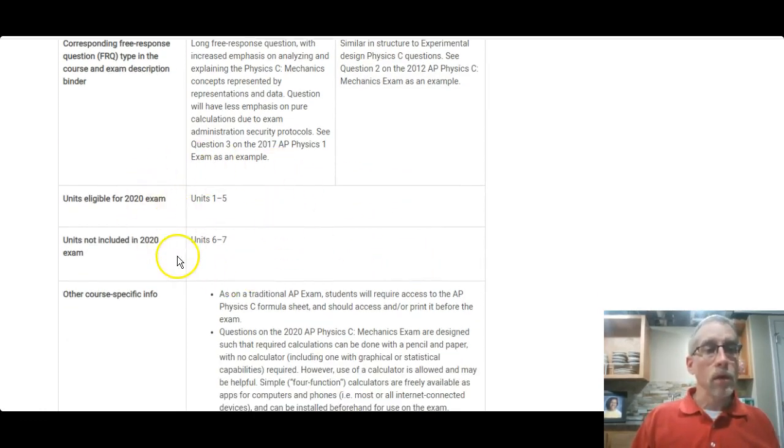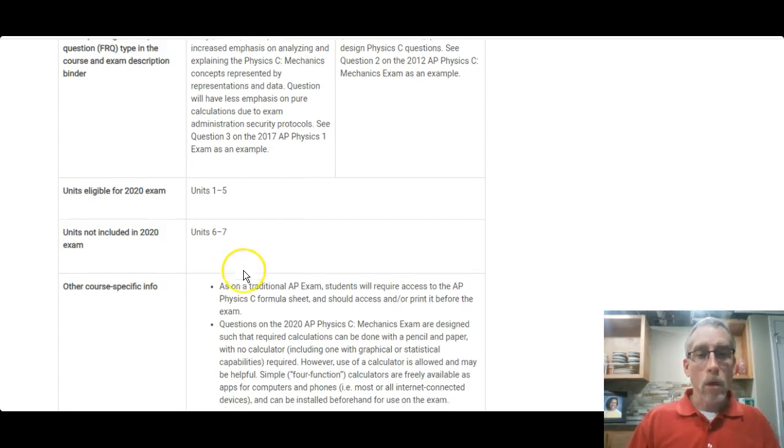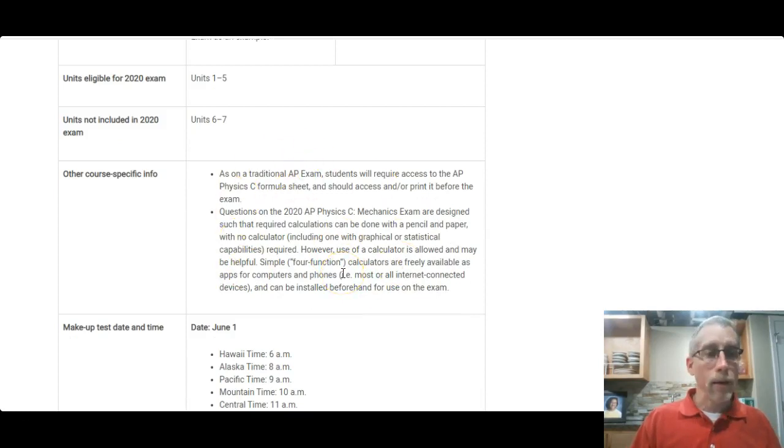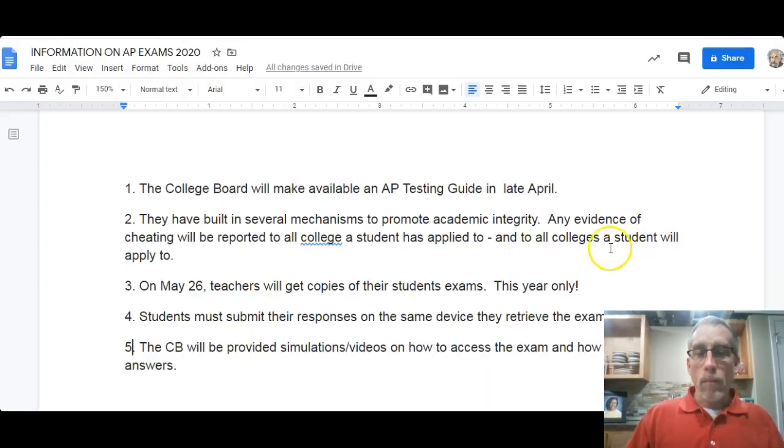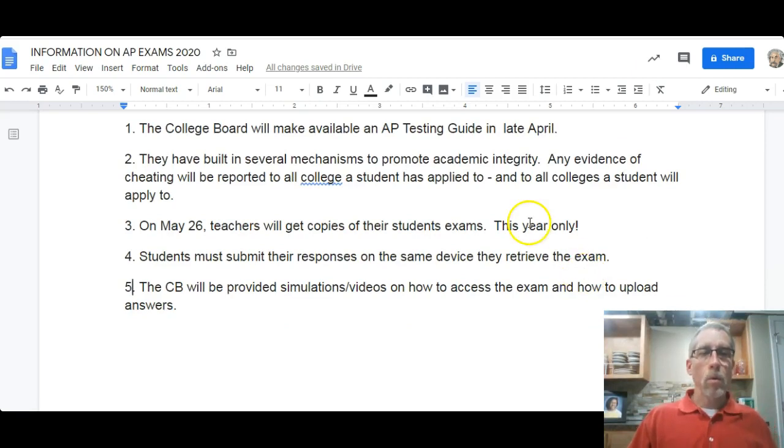So the units for this, we're not including units 6 and 7, which doesn't mean anything to you, but does not include gravitation and does not include oscillation, simple harmonic motion. That was the last unit of what we did in the first semester. So everything up through rotation. Yes, rotation will be included, okay? So a few other things that they're telling you here really probably doesn't mean a whole lot. I want to show you a couple other things as well. We'll go back and look at E&M in just a second. So they're going to have a little bit more information in late April, which is getting kind of late. And you can bail out at any time, so it's not like you have to decide right now.